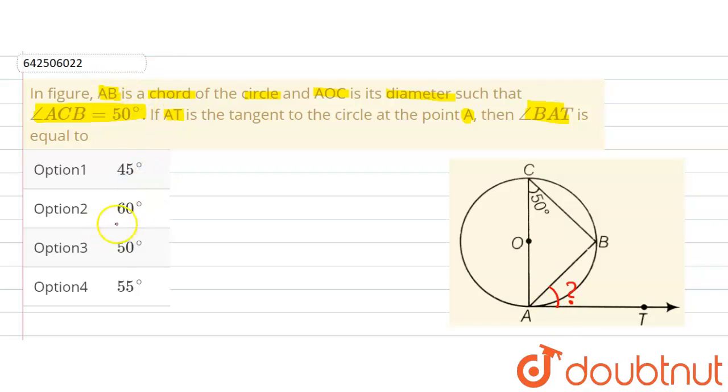Option 1 says 45 degrees, option 2 says 60 degrees, option 3 says 50 degrees, and option 4 says 55 degrees.